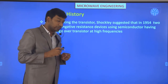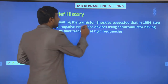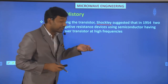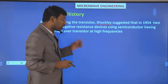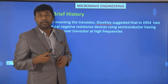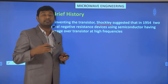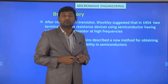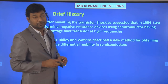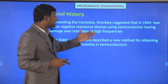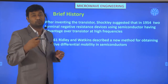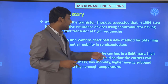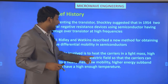After inventing the transistor, Shockley suggested in 1954 that two-terminal negative resistance devices using semiconductors have advantages over transistors at high frequencies. Based on this, in 1961 Ridley and Watkins described a new method for obtaining negative differential mobility. The principle involves heating carriers in a light mass, high mobility subband with an electric field so that carriers can transfer to a heavy mass, low mobility, higher energy subband when they have a high enough temperature.